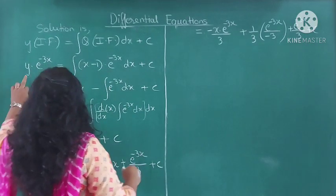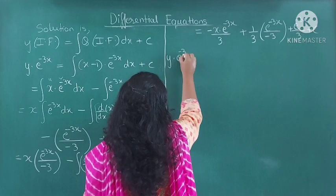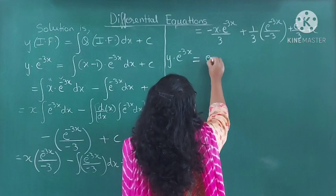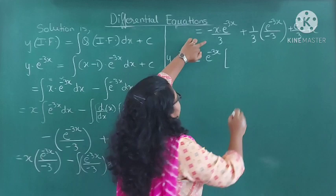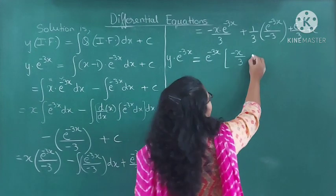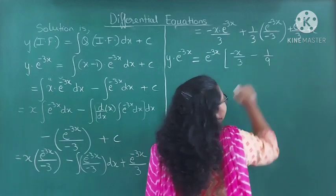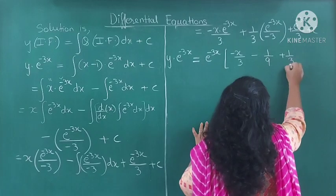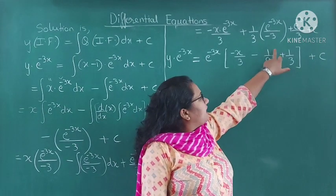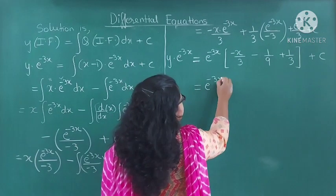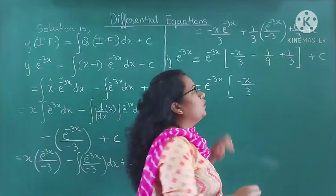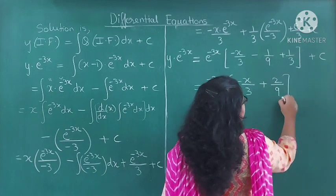Now we simplify the full result. The final equation is: y into e raised to minus 3x equals — taking e raised to minus 3x common — we remain with minus x upon 3, then minus 1 upon 9, and plus 1 upon 3, plus C. Simplifying the constant terms with denominator 9: minus 1 plus 3 gives 2, so we get plus 2 upon 9 plus C.